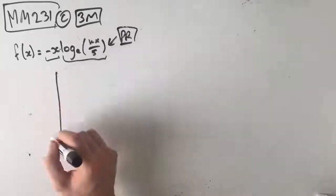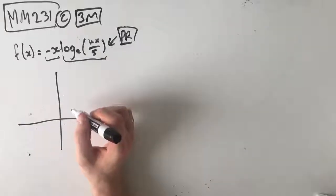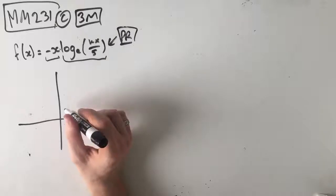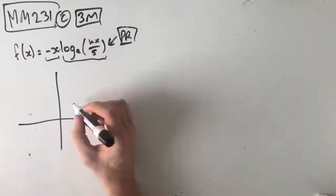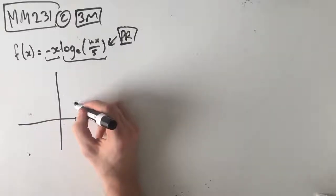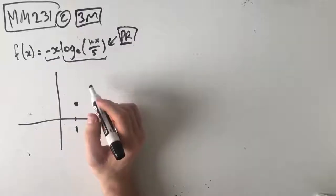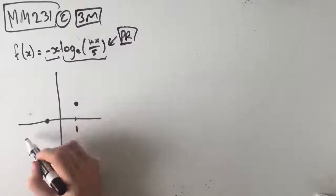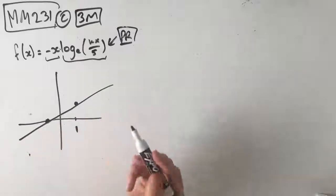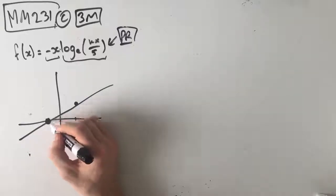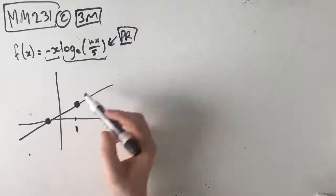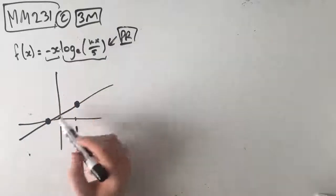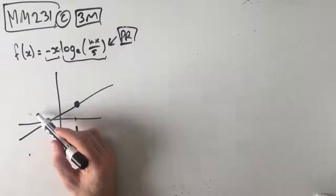We don't necessarily know what this graph looks like, but that doesn't really matter. The tangent to the graph of f at x equals 1 — let's call x equals 1 here — passes through the point negative 1, 0, which is a point over here. So this is a tangent to this graph but also passes through the point negative 1, 0.